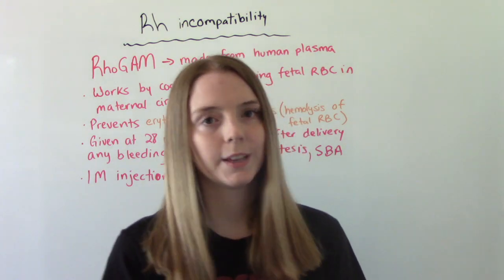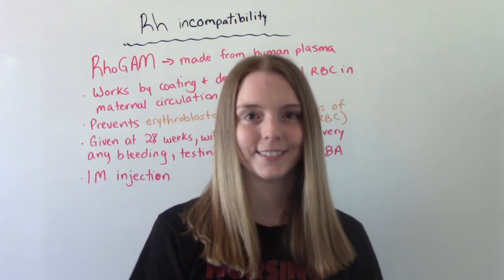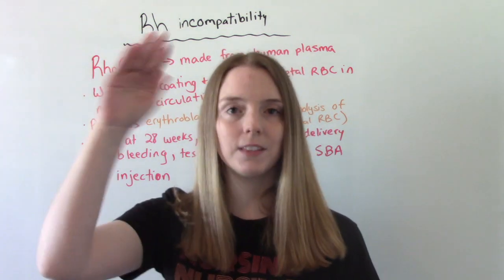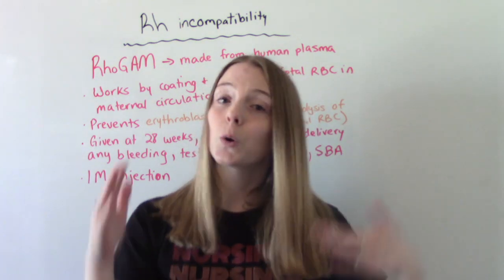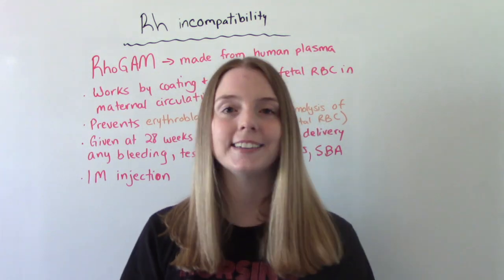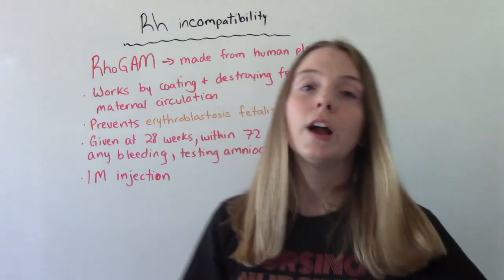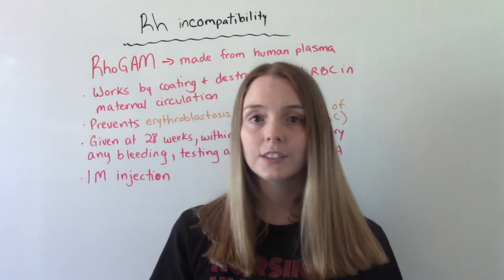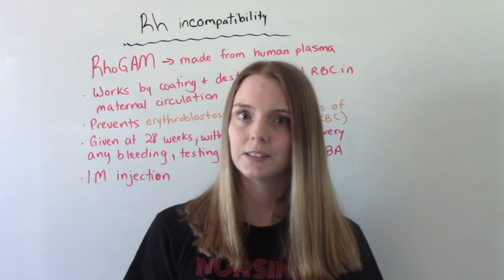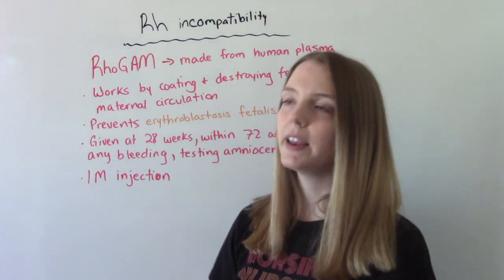RhoGAM is what we give to our RH negative moms to prevent isoimmunization from happening in the first place. RhoGAM is made from human plasma — it is actually a human blood product, not a medication, so you're probably not going to find it in your drug book. It is given via IM injection. If your patient has cultural or religious considerations where they refuse blood products, you need to know that. RhoGAM works by coating and destroying any fetal red blood cells that have made their way into mom's circulation.